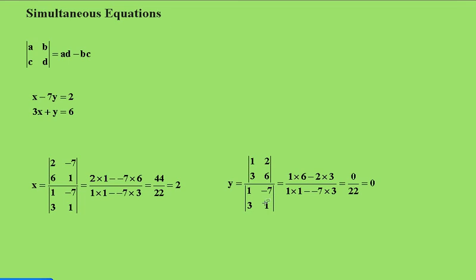Same on the other side, keep that the same, just replace now. This time the Y's get replaced with the 2 and the 6 and we get the result of a 0 on the top. And that was the answer X equals 2 and Y equals 0.